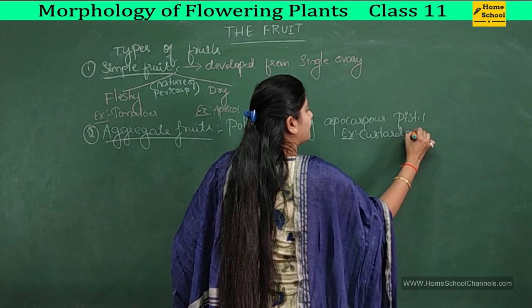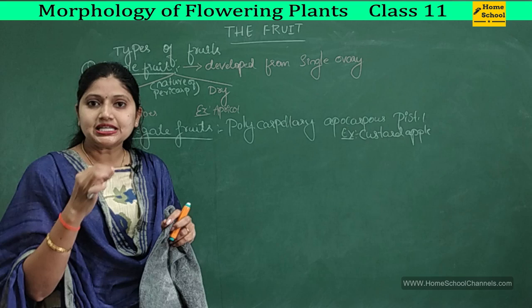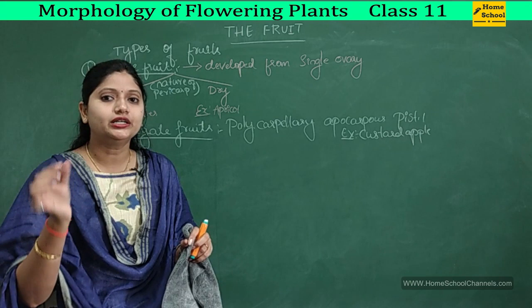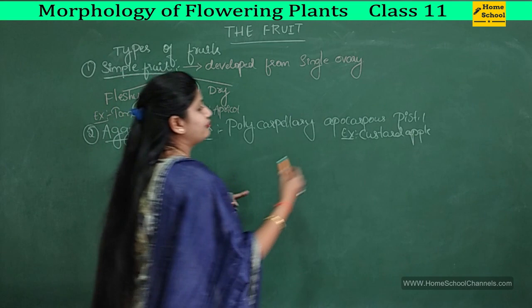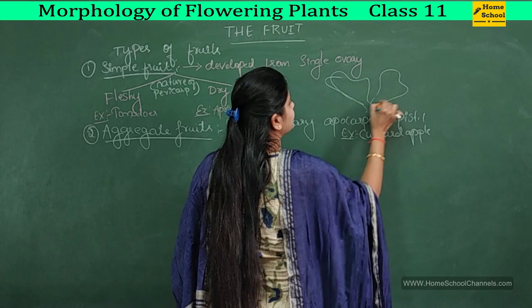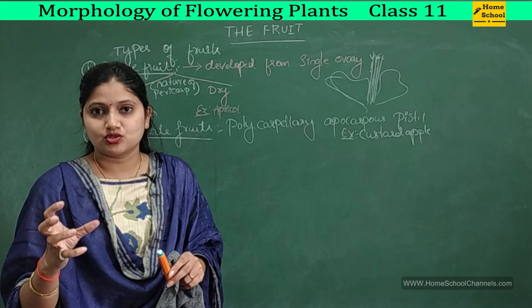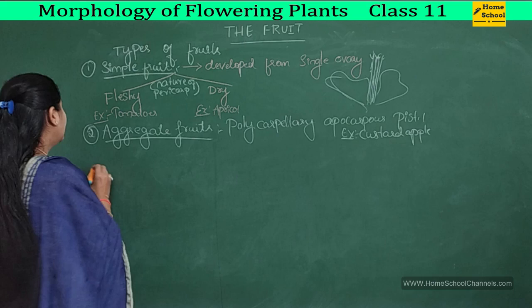An example of an aggregate fruit is the custard apple. In custard apple, there are many seeds, and around every single seed there is edible pulp — the ovule turned into the seed and the ovary turned into the fruit. So many carpels together form one single fruit, which is the aggregate fruit.